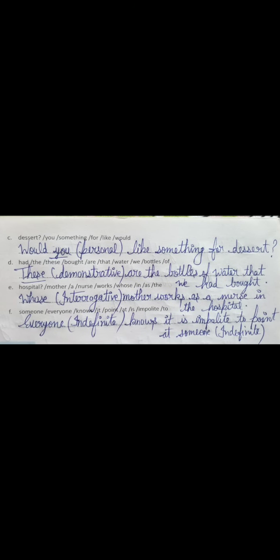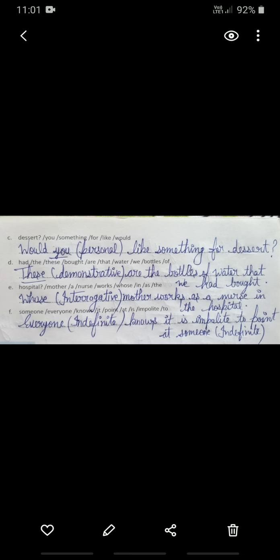The third one has a question mark, which is an interrogative sign, so the rearranged sentence is: 'What would you like something for desert?' 'You' is a personal pronoun. There is no other pronoun in this sentence — just 'you,' which is personal.